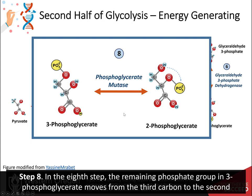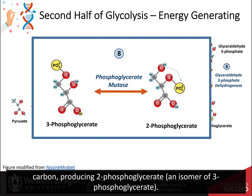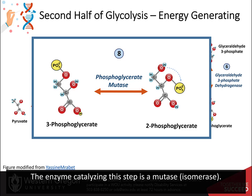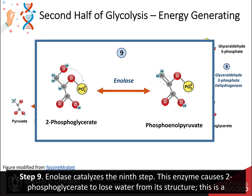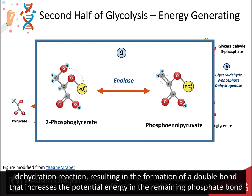Step eight. In the eighth step, the remaining phosphate group in 3-phosphoglycerate moves from the third carbon to the second carbon, producing 2-phosphoglycerate, an isomer of 3-phosphoglycerate. The enzyme catalyzing this step is a mutase, or isomerase. Step nine. Enolase catalyzes the ninth step. This enzyme causes 2-phosphoglycerate to lose water from its structure in a dehydration reaction, resulting in the formation of a double bond that increases the potential energy in the remaining phosphate bond, producing phosphoenolpyruvate, or PEP.